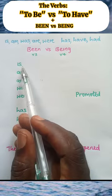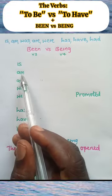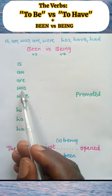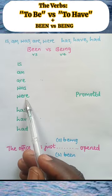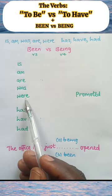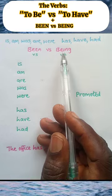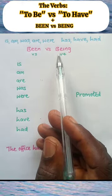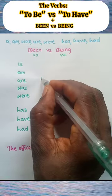And here we have the verbs to be: is, am, are, was, were. These verbs to be precede being. So we can come here and write being.